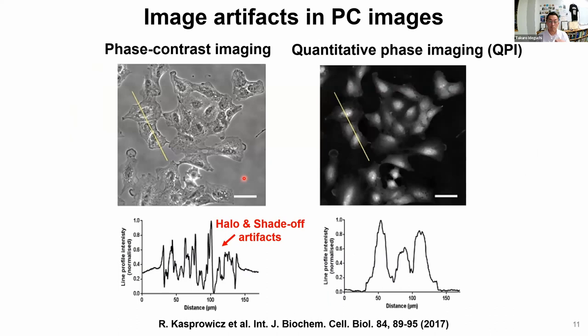However, as you know, the phase contrast microscope produces an image artifact called halo or shade-off, so you cannot get quantitative information from this imaging technique. Therefore, afterwards we switched to quantitative phase imaging, which provides very quantitative phase images.